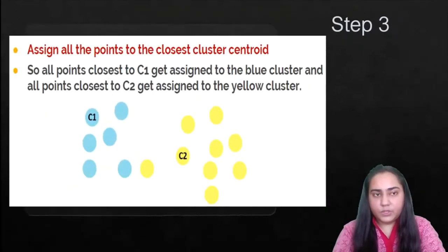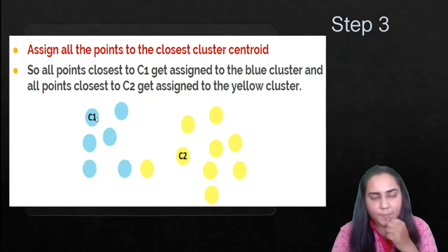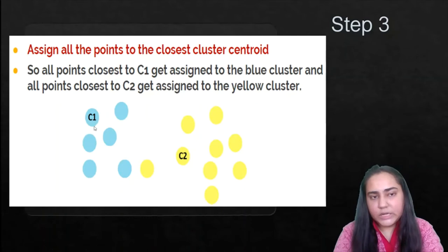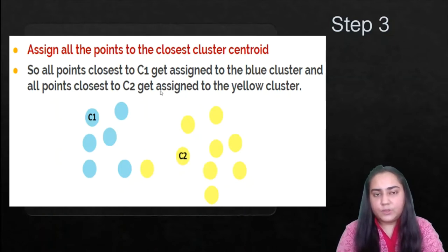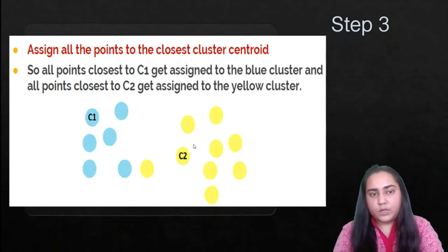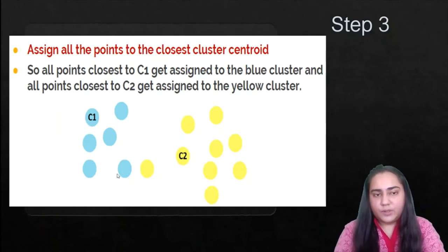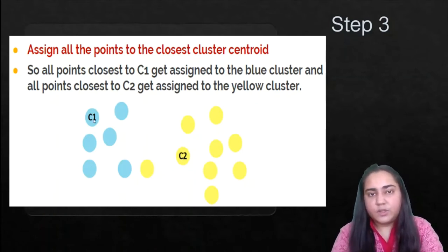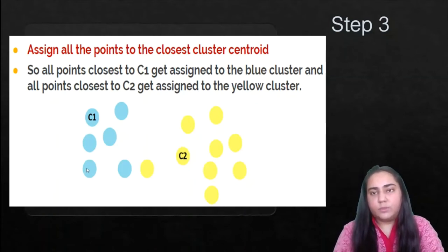Step three is to assign all points to the closest cluster centroid. Everything near C1 turns blue and everything near C2 turns yellow. All points closest to C1 get assigned to the blue cluster and all points closest to C2 get assigned to the yellow cluster. For example, if a given point is closer to C1 than to C2, that point will be assigned the blue cluster.